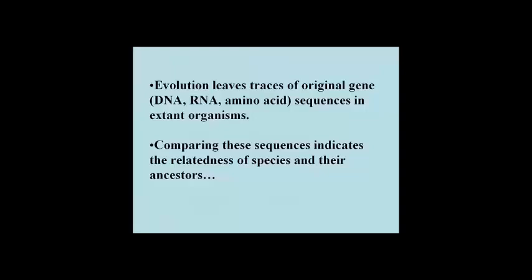The diverse organisms alive today share a common heritage of genes and proteins, many of whose nucleotide and amino acid sequences can be compared and traced backwards in evolution to reveal a history that is remarkably similar, and even more accurate, than the first evolutionary trees generated based on morphological similarities between organisms.